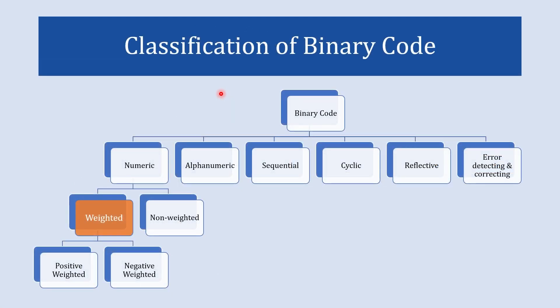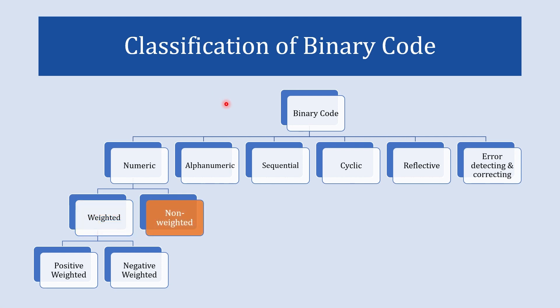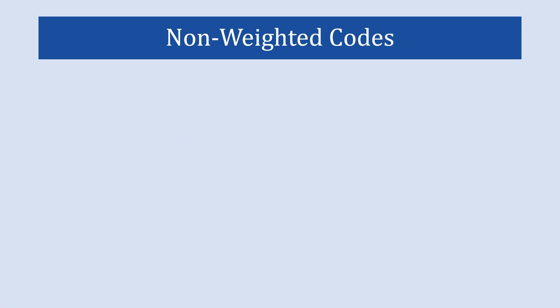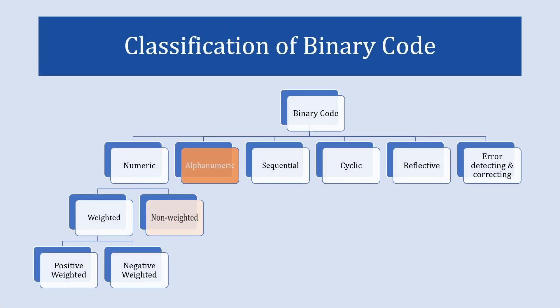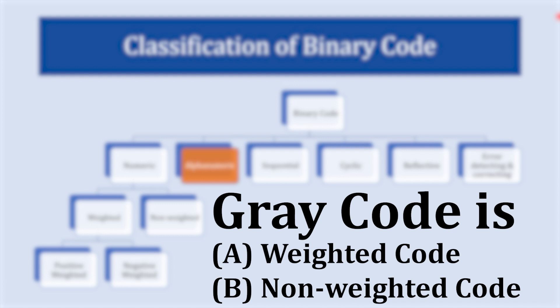These were the weighted codes where each digit has some specific weight. In non-weighted code there is no specific positional weight. Examples of non-weighted codes are XS3 code and gray code. We will not discuss these in detail right now because upcoming videos will cover XS3 code and gray code in detail. Comment below: is the gray code a weighted code or a non-weighted code?